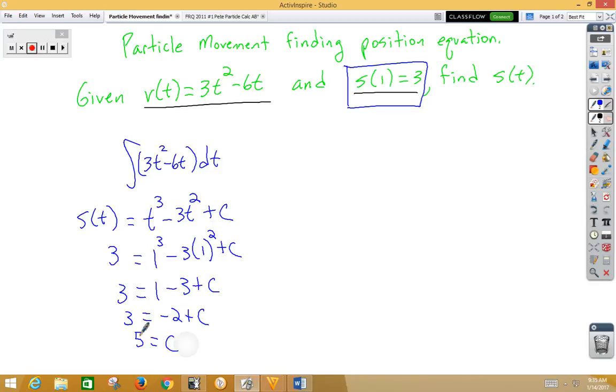We now plug that in to our s of t. So we have s of t is equal to t cubed minus 3t squared plus 5. Keep in mind, whatever is inside here, in this case a 1, that's what's being plugged in for t. So here's our s of t.